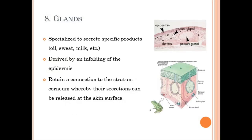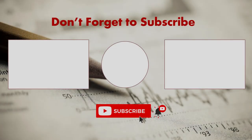Finally, glands are specialized structures in the epidermis that are also part of the skin. In birds, specialized cells at the base of their feathers produce oil that keeps feathers silky, provides a water barrier, and waterproofing for birds that dive in water. Some animals also have sweat glands present in the epidermal layer, and milk glands are also present in the epidermal layers.